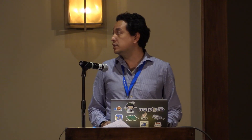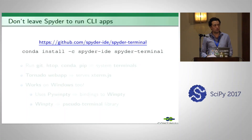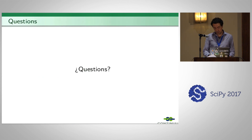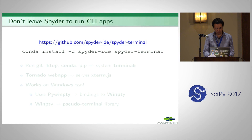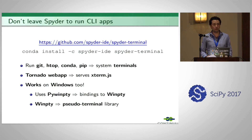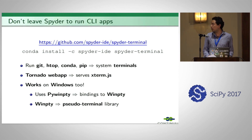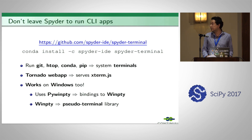The third plugin is called Spyder Terminal, and it allows you to run command-line applications inside Spyder. Not all command-line applications can be run in Spyder's IPython console — for example, git, htop, conda, and pip need to be run in system terminals to work correctly. Essentially this plugin is a Tornado web app that serves xterm.js, a JavaScript terminal emulator library. This is exactly the same way that Jupyter Notebook embeds system terminals inside the application.